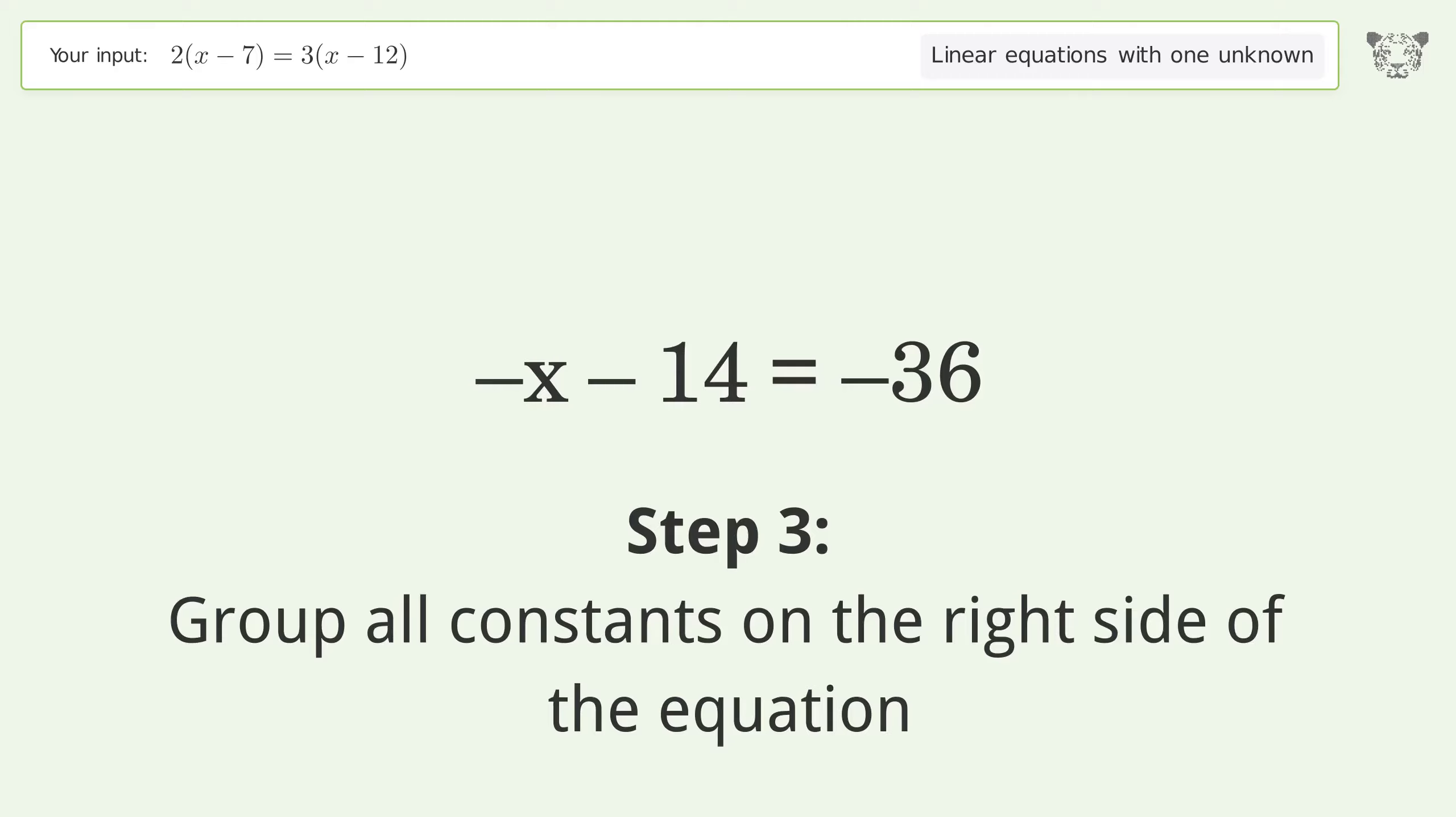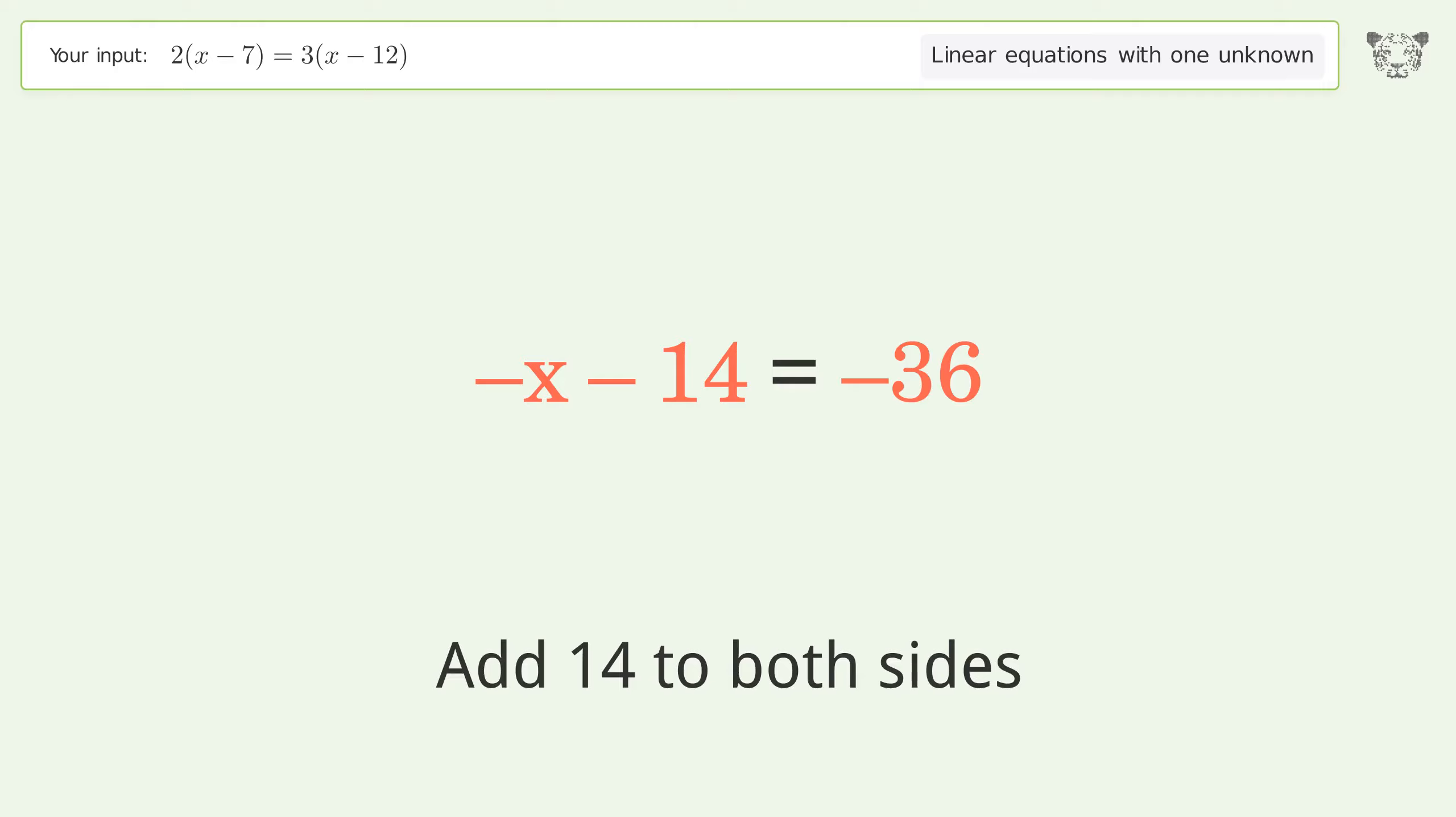Group all constants on the right side of the equation. Add 14 to both sides. Simplify the arithmetic.